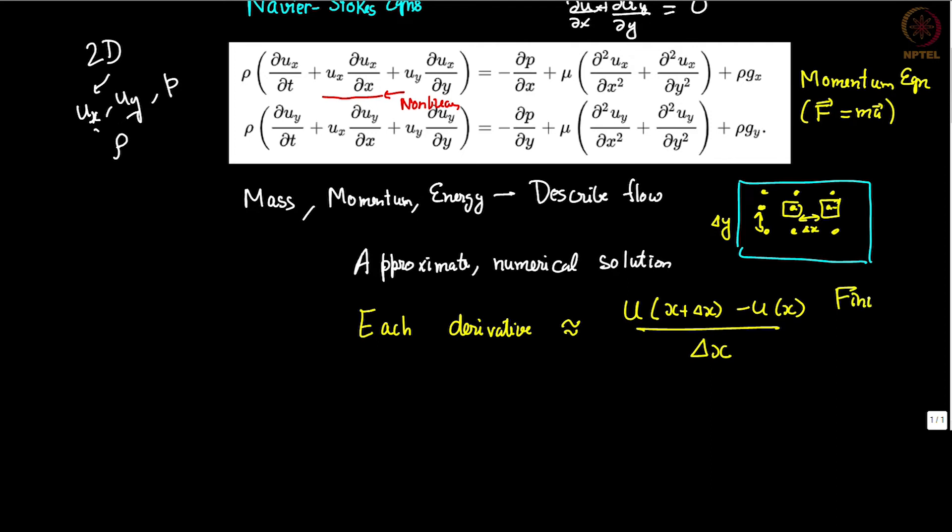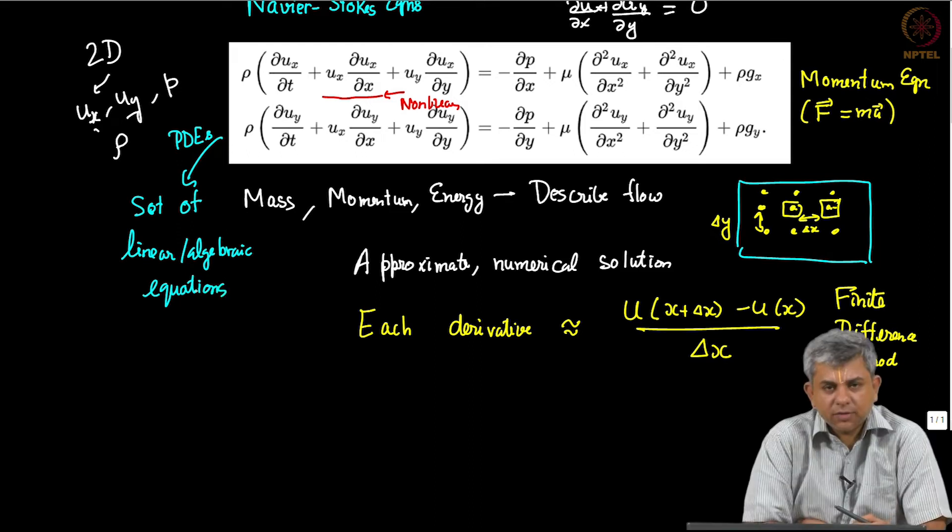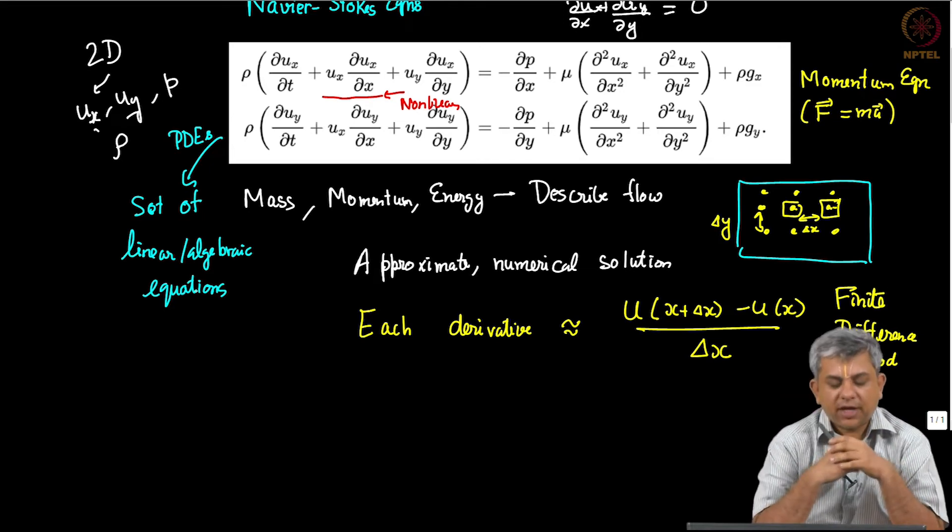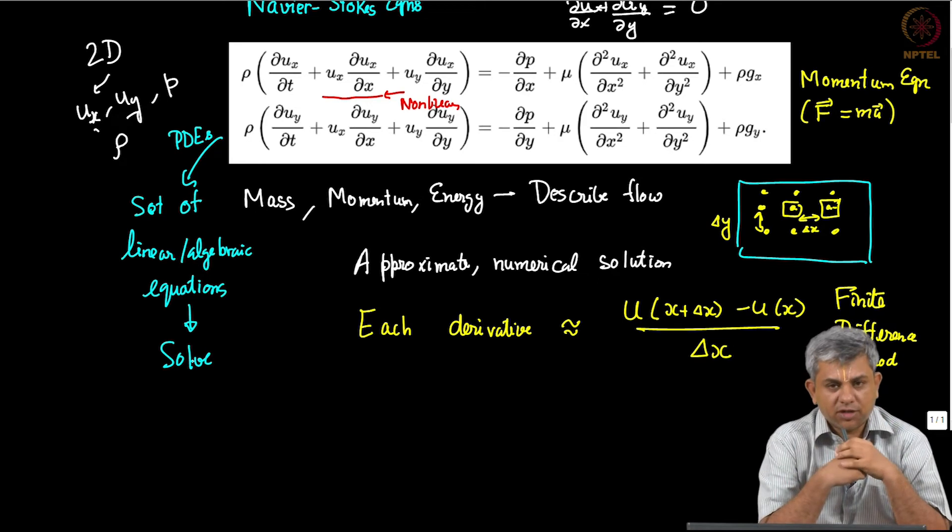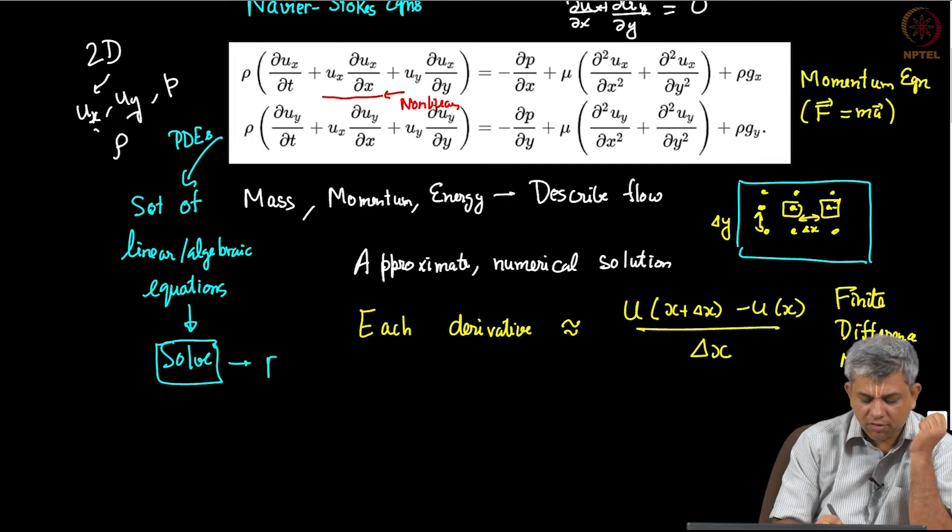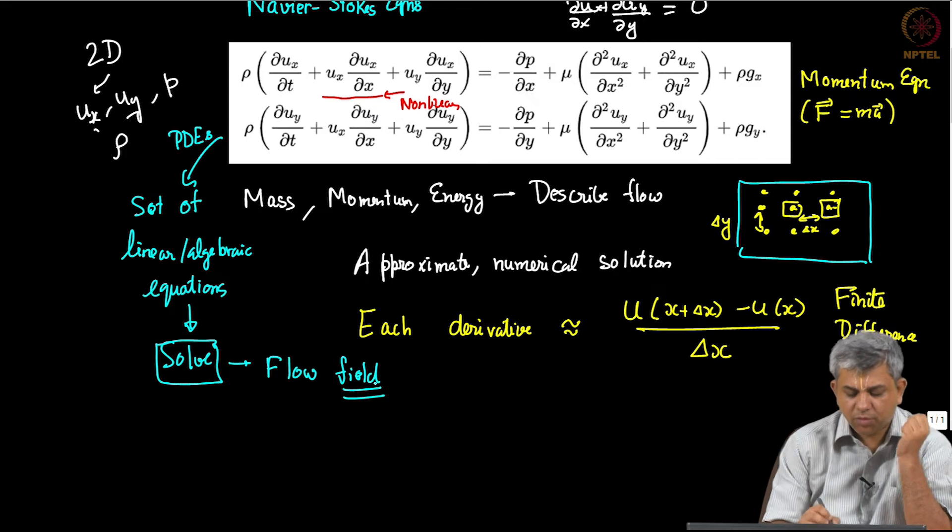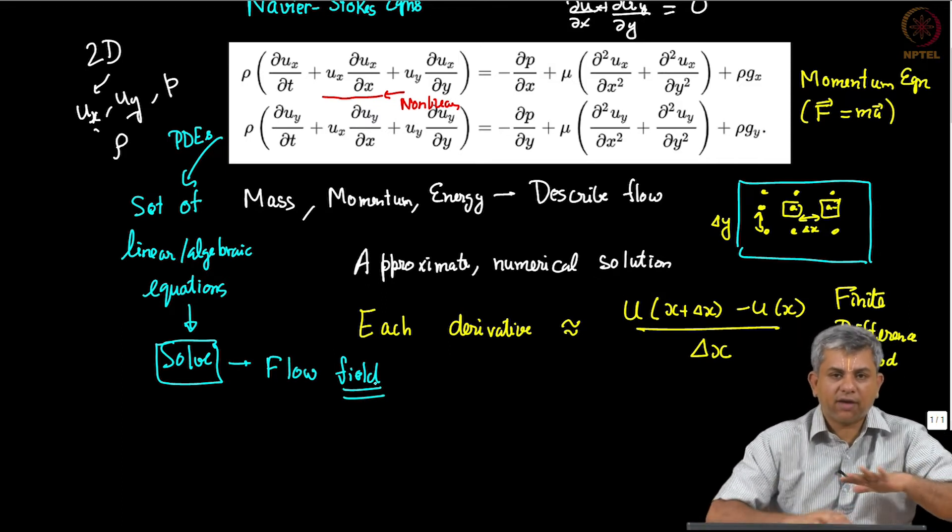This is called the finite difference method. This was one of the first methods that was tried about a hundred years ago. Now we have come to much more sophisticated schemes, but the basic idea still remains the same. What happens is this set of PDEs become a set of linear or algebraic equations. So each PDE is converted to a bunch of linear equations, and then we know how to solve linear equations. We know how to solve combinations of linear equations or even combinations of algebraic equations, and you get the solution.